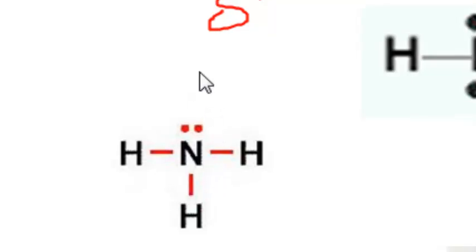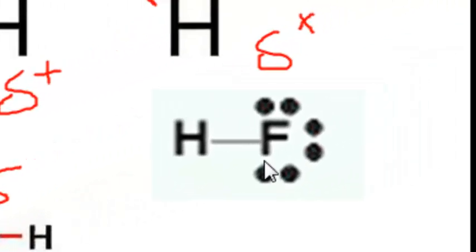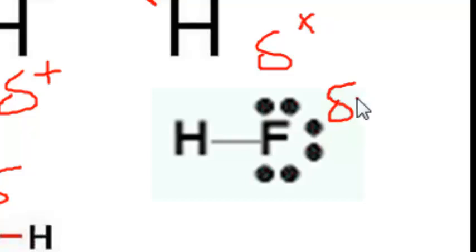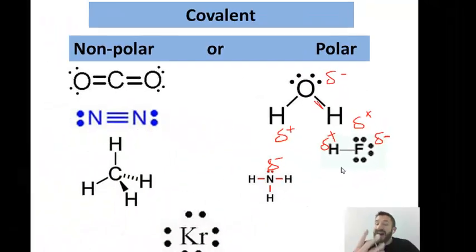Ammonia is also polar, so the nitrogen is partially negative and each one of the hydrogens is partially positive. Hydrogen fluoride: fluorine is the most electronegative element and hydrogen is less electronegative, so the fluoride is partially negative and the hydrogen is partially positive. Each one of these molecules on the right-hand side is polar because there's a negative or positive end. The four particles on the left-hand side are nonpolar because there's not a negative or positive end.